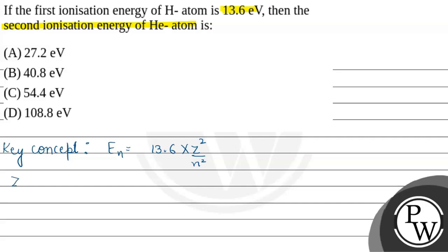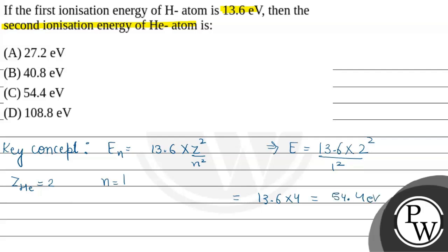For helium, Z is 2, and the value of N will be 1 only. So energy will be equal to 13.6 into Z square — that is 2 square — upon N square, which is 1 square, because we are considering the first orbit. So 13.6 into 4 is equal to 54.4 electron volt.